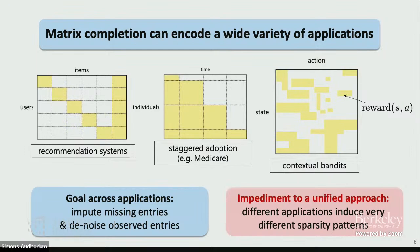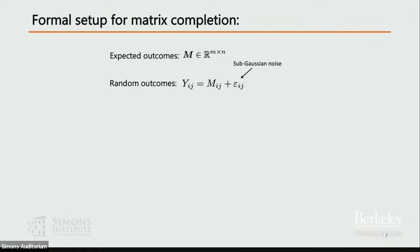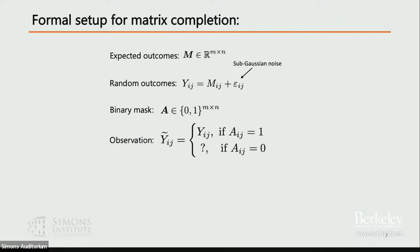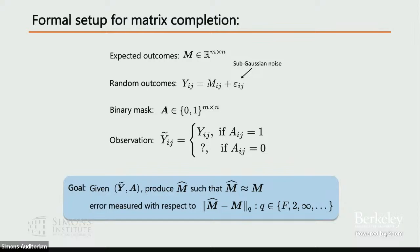Here's the formal setup for matrix completion. We have an M by N matrix. I define expected outcomes as M, and noisy outcomes as Y_ij = M_ij + ε_ij, where ε is mean-zero sub-Gaussian noise. There's a binary matrix A in {0,1}^{M×N}: if A_ij = 1, I observe Y_ij; if A_ij = 0, it's missing. The goal is, given the observed Y and A, produce M-hat close to M in some norm — either Frobenius norm for average recovery, or the infinity norm for entry-wise guarantees.